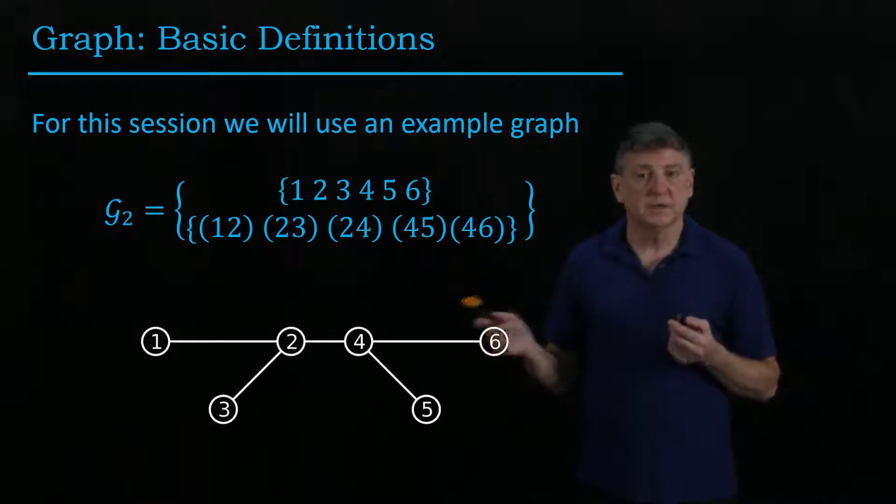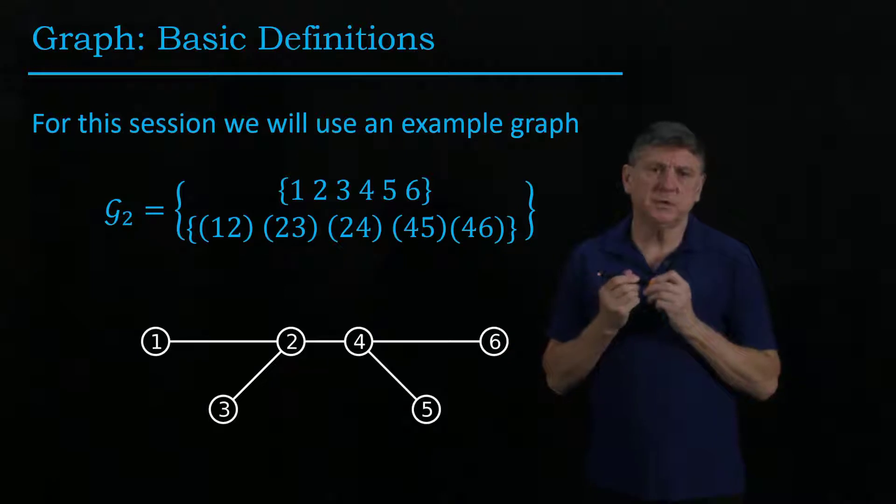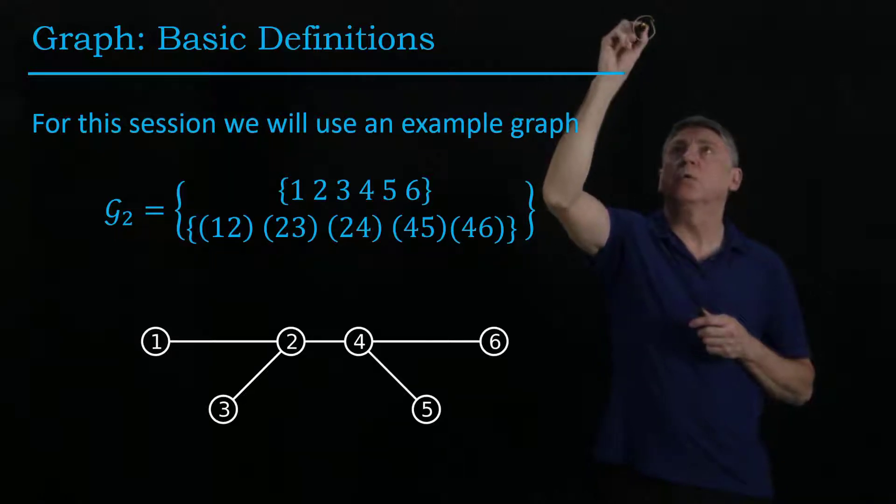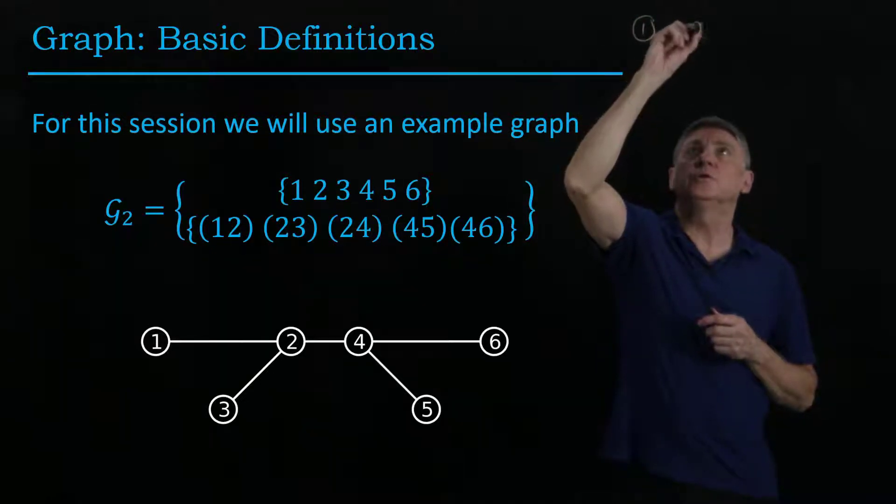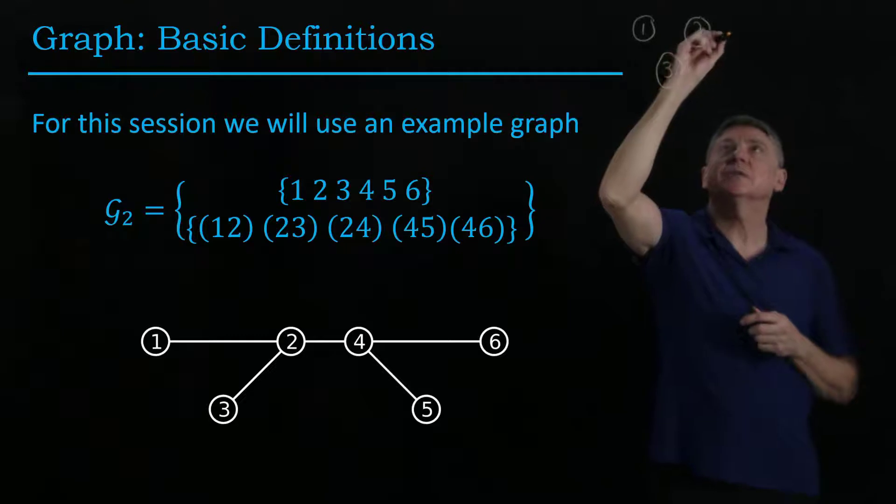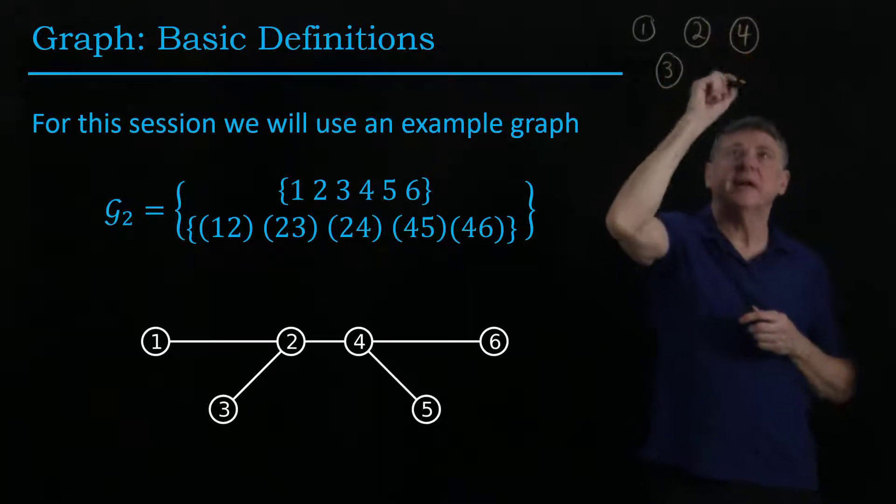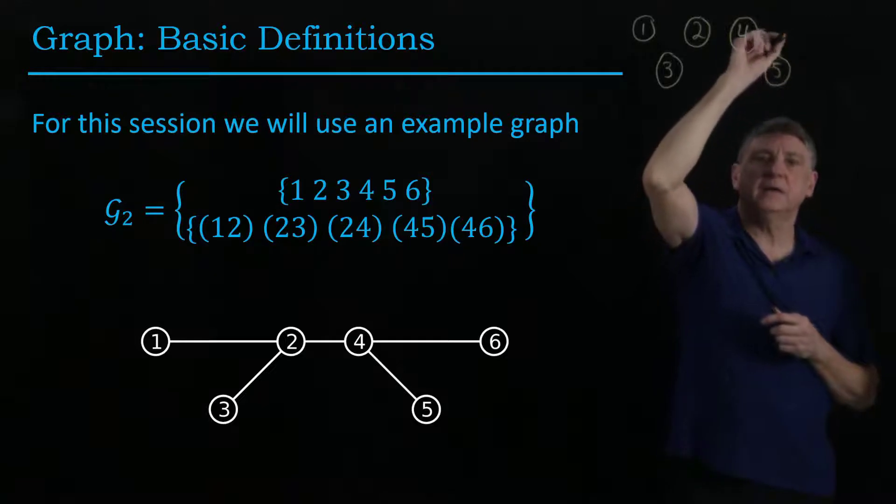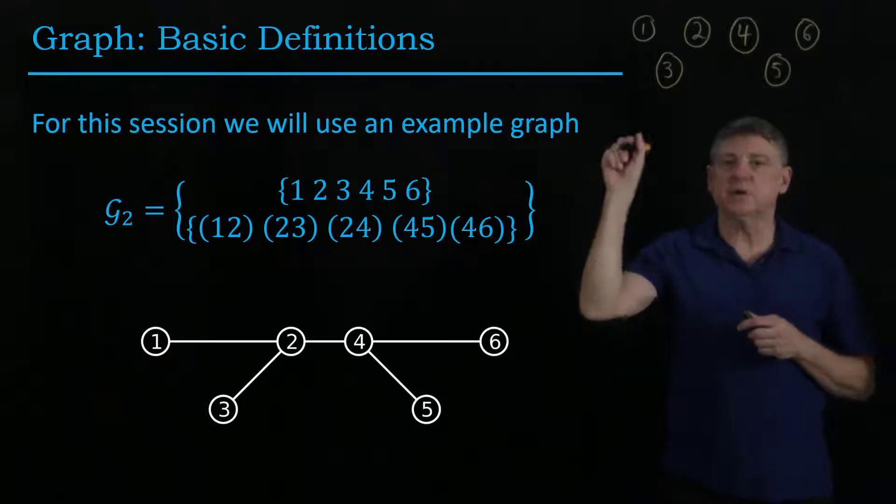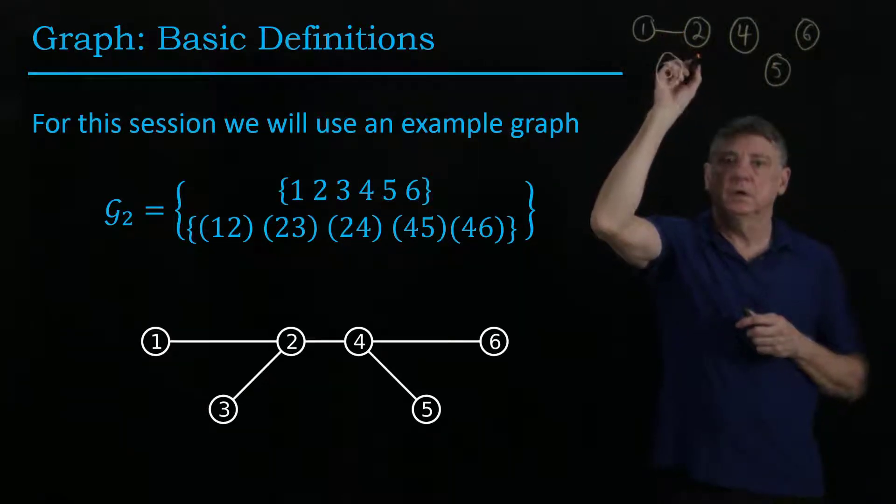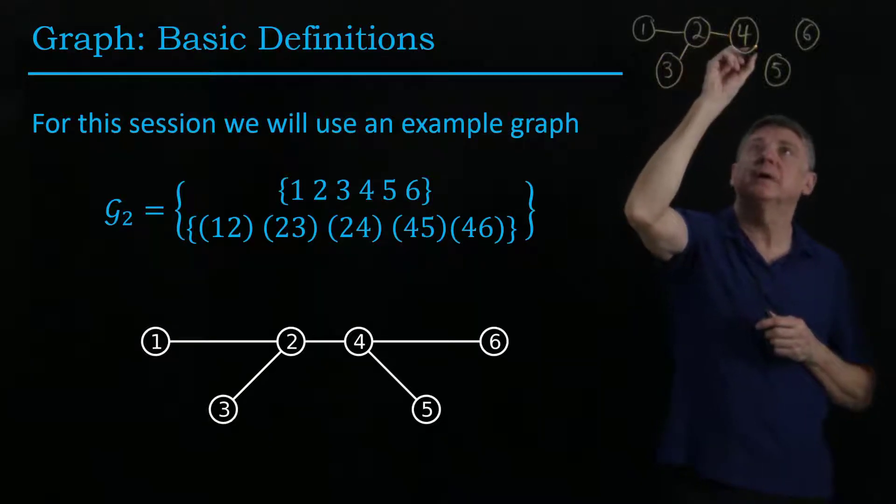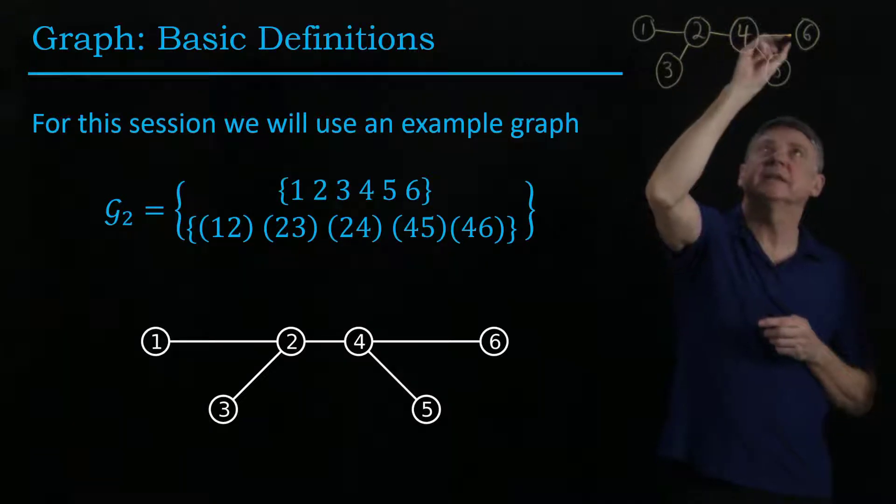We can draw this in this way. Because we'll be using this quite often, let's draw this graph now for ourselves. So vertex 5 and vertex 6. And then the edges from the list are: 1 is connected to 2, 2 is connected to 3, 2 is connected to 4, 4 is connected to 5, and 4 is connected to 6.